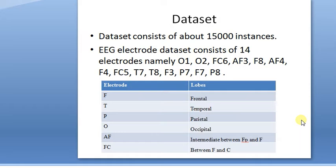The dataset I am using has overall 15,000 instances and 14 electrodes that are namely written here. Each electrode has a different letter associated with it. The letter stands for—for example, F stands for frontal, that is the frontal part of the brain. T stands for temporal, P for parietal, O for occipital. These are the lobes of the brain.